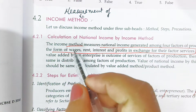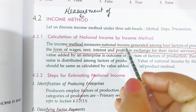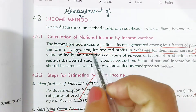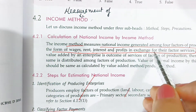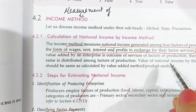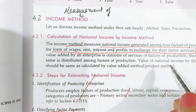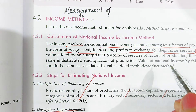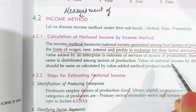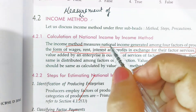As the name indicates, in the income method, national income is generated among the four factors of production in the form of wages, rent, interest, and profit in exchange for their factor services. When the factors provide services to the firm, in lieu of their services they receive income in the form of wages and salaries, interest, rent, and profit. The sum total of all these factor incomes gives you the national income.